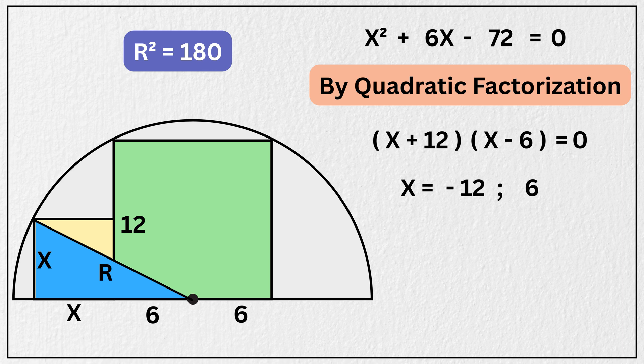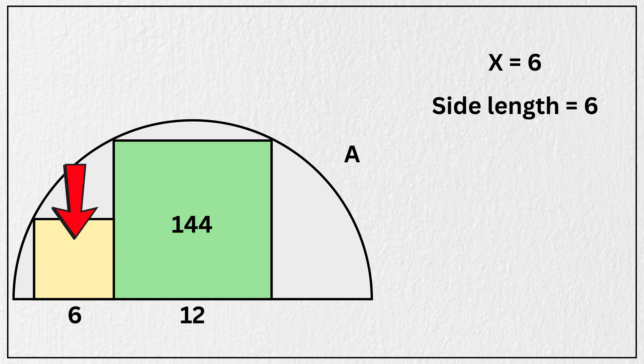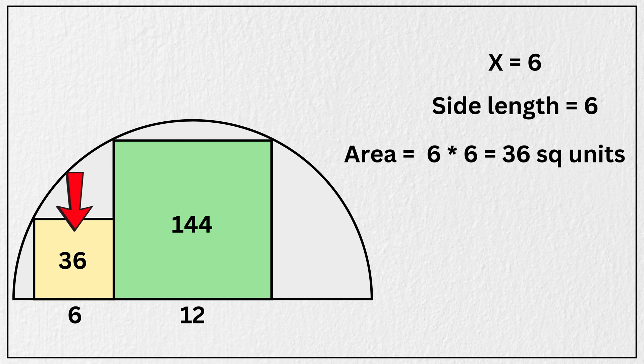But since a length cannot be negative, we take x equal to 6 units. Therefore the side length of this smaller square is 6 units, and its area is 6 times 6, which is 36 square units. And that's our final answer.